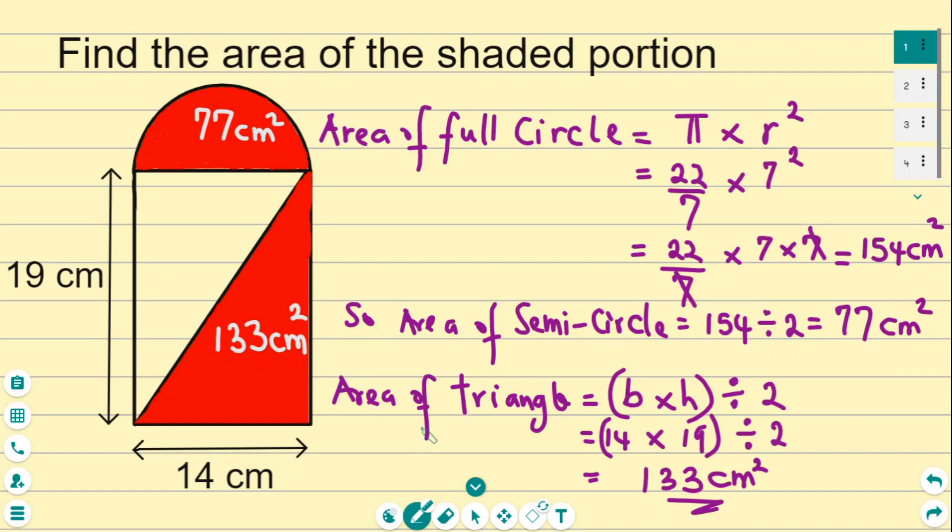Now if the question asked to find the total area of the shaded part, all you need to do is add 77 to 133. That would give you 210 centimeters squared. But per the question, we're not looking for the total area, just the area of each shaded part, and that's what we got here.